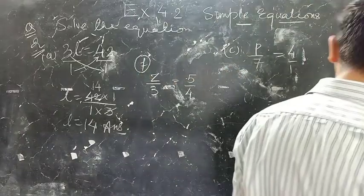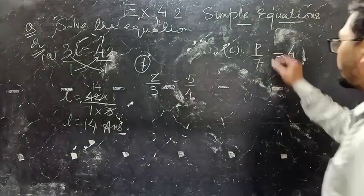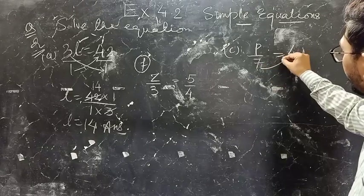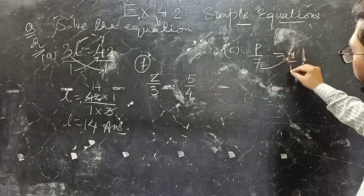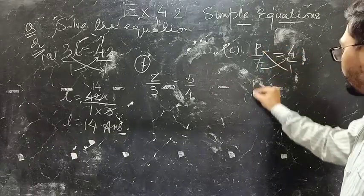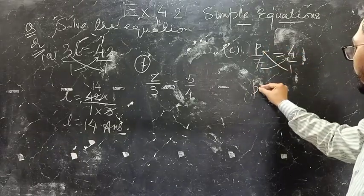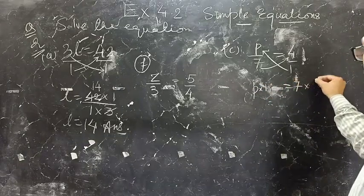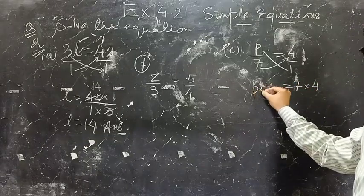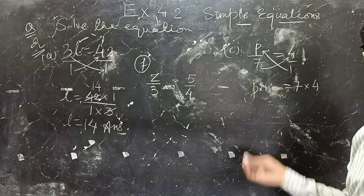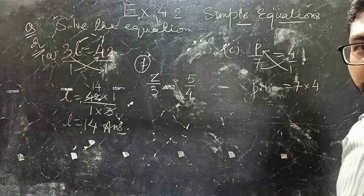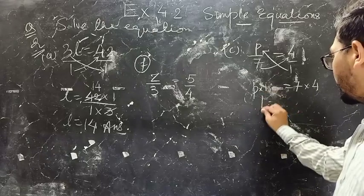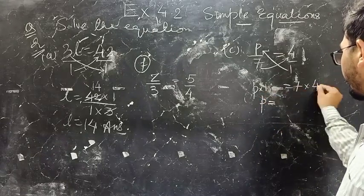Part C: P upon 7 equals 4 upon 1. Again we need to cross multiply these values. So P into 1 equals 7 into 4. If you multiply 1 with any number, the answer is the number itself. So P equals 7 into 4, which is 28.